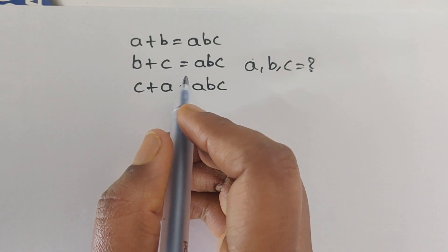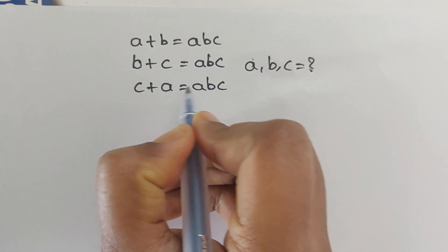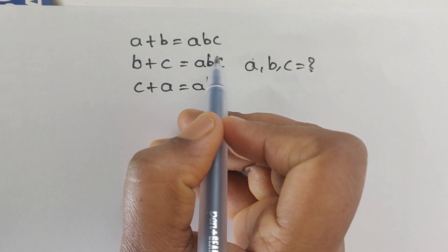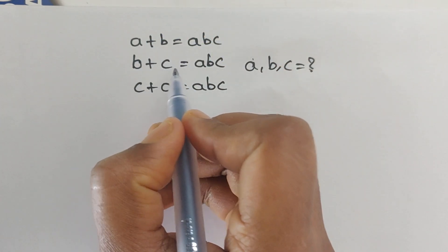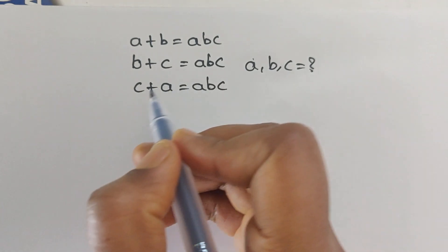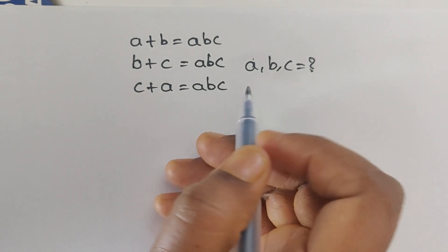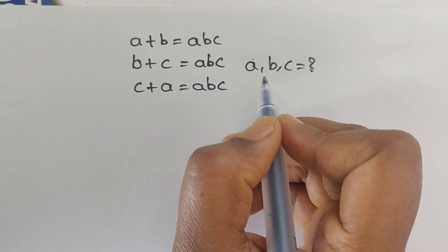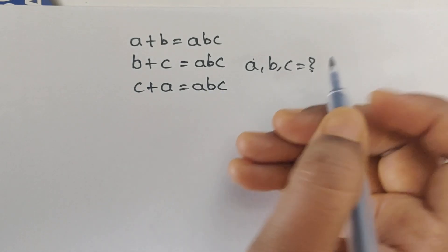Hello everyone, welcome back to our channel. Here we have one problem: a plus b equals abc, and b plus c equals abc, and c plus a equals abc. In this problem we have to find the values of a, b, and c.